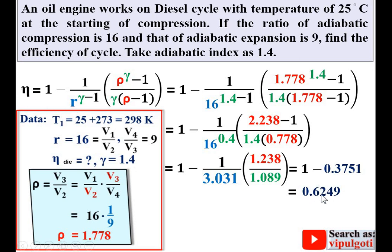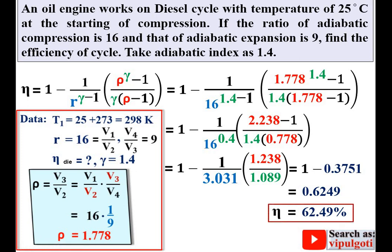Efficiency is always expressed as a percentage, so multiplying by 100 gives the efficiency of the diesel cycle as 62.49%. That is your answer. Thanks, dear friends — please hit the like button to appreciate this video.